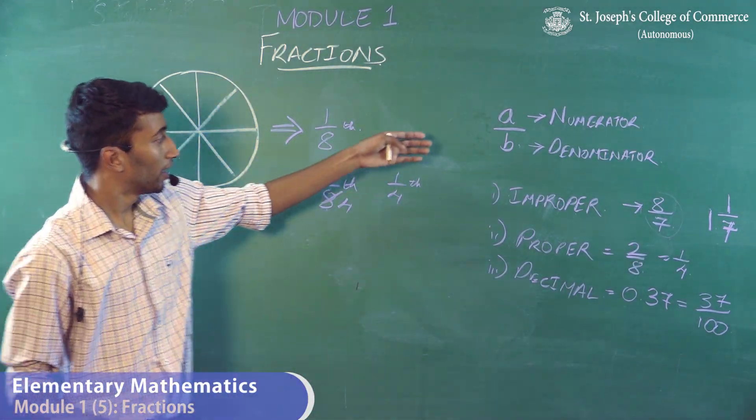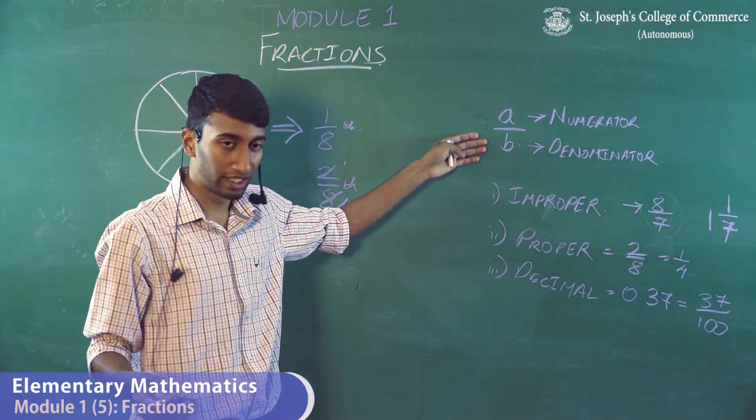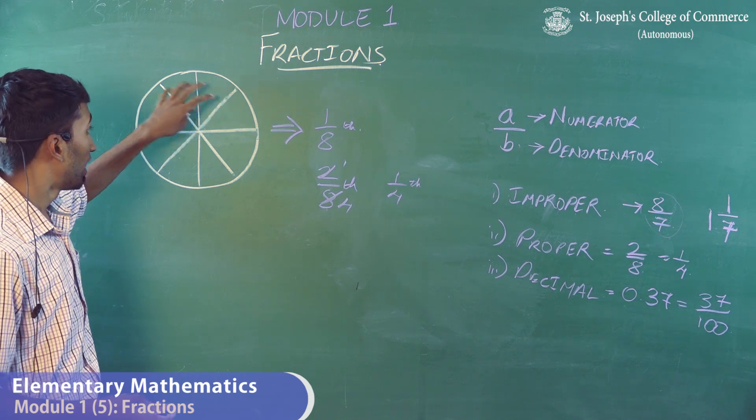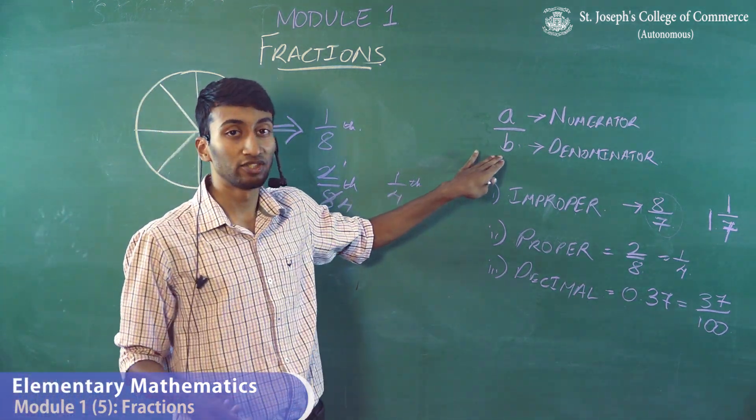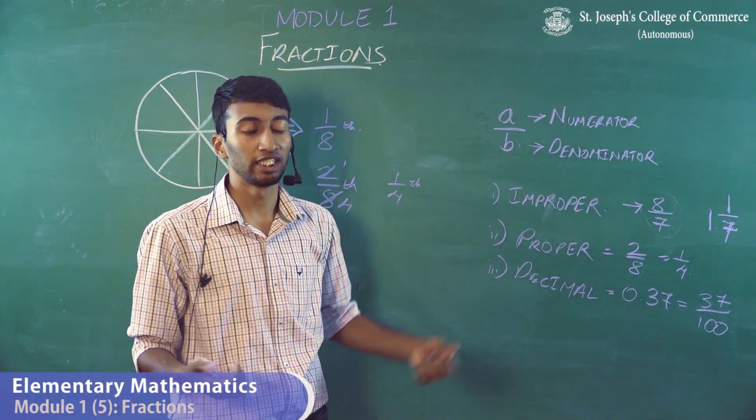So now, B generally does not equate to 0. As, say for example, out of eight parts, you've eaten one part. Now, out of zero parts, you can't eat anything. So that is why B is generally not equal to 0.